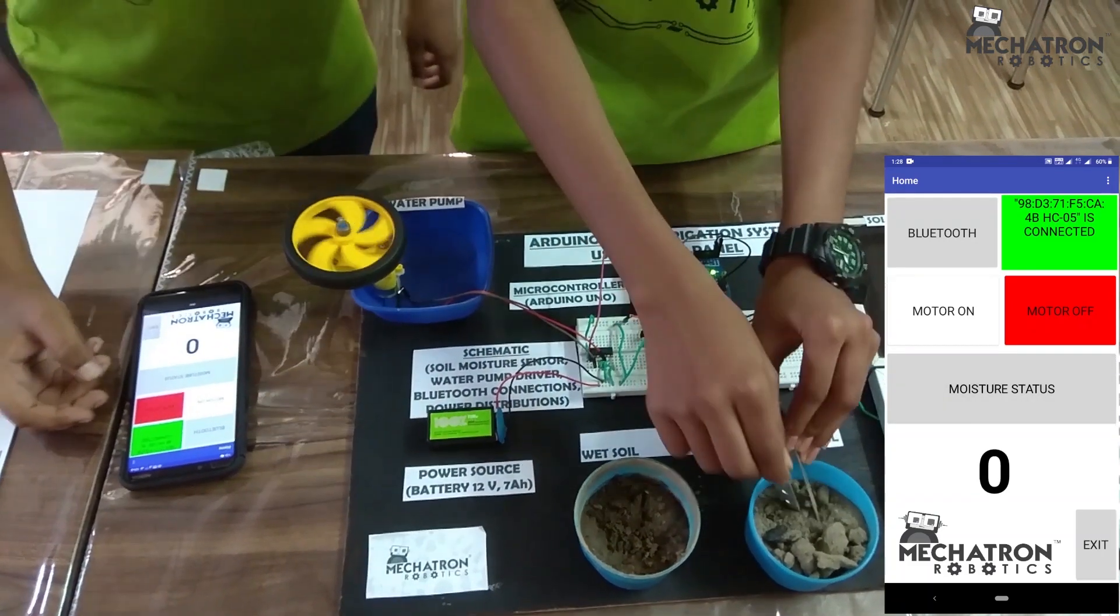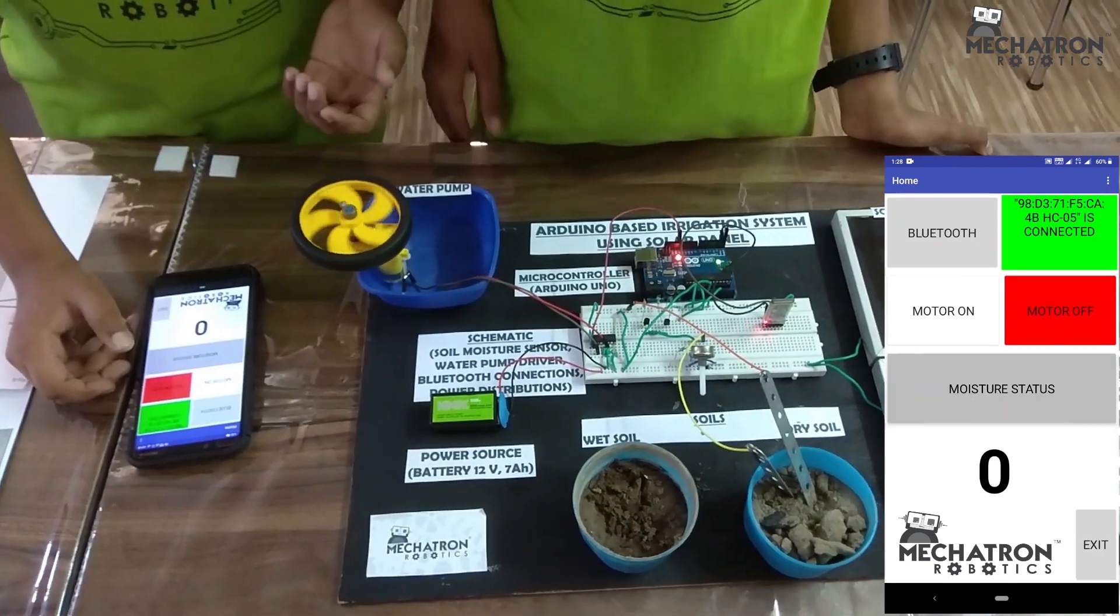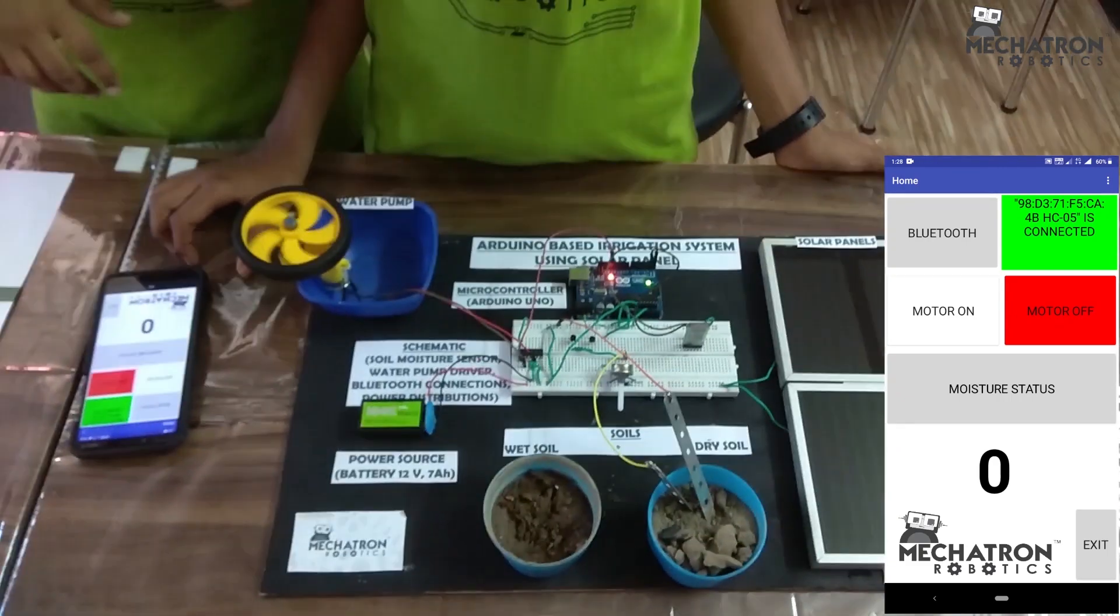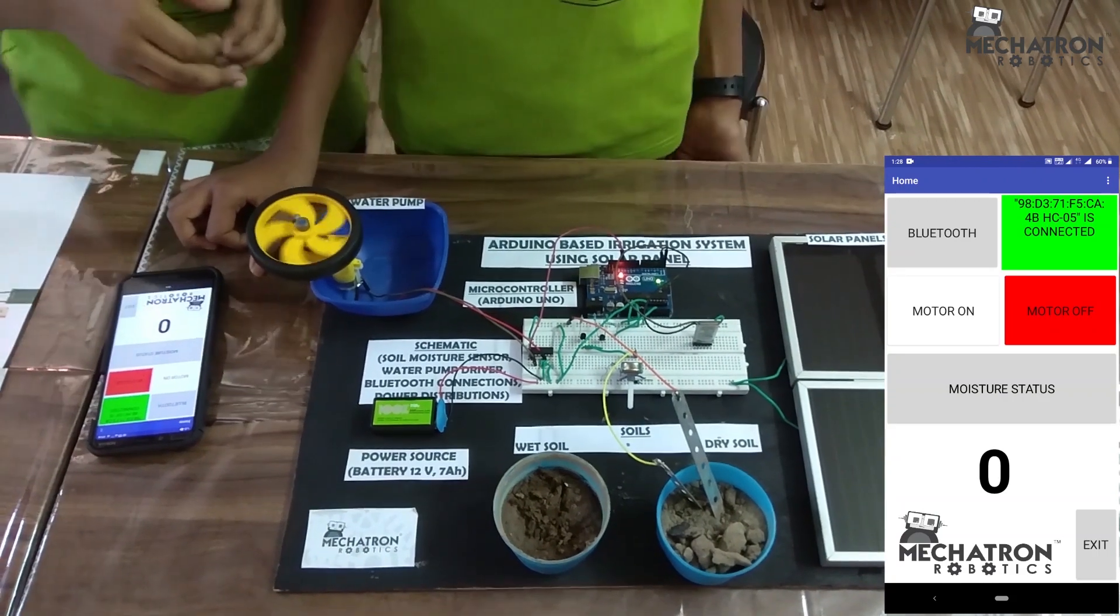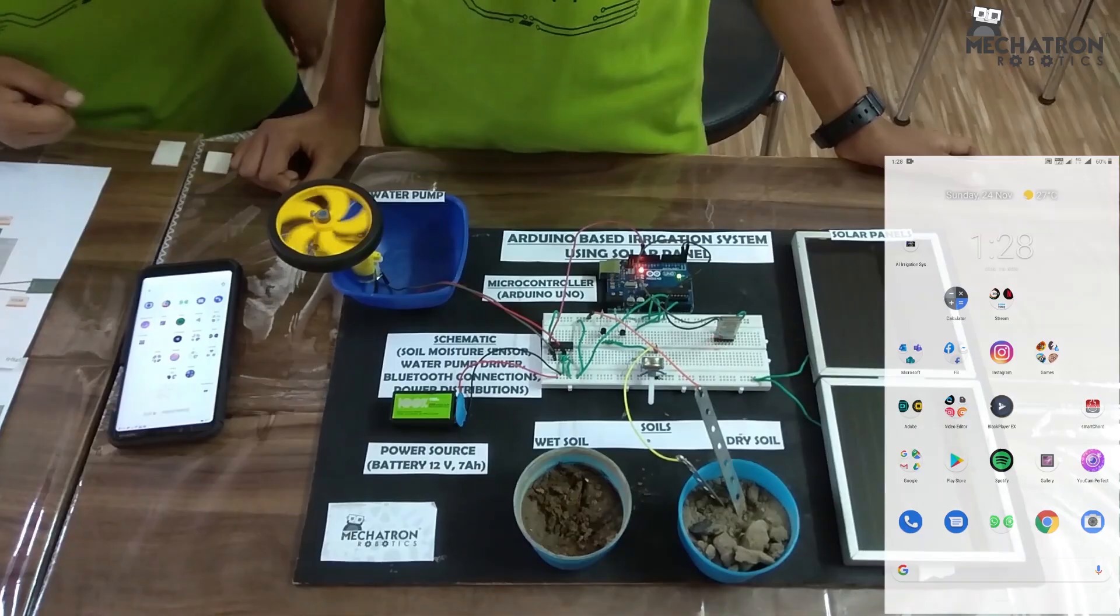But if we put in a dry soil, let us see what is the soil moisture value. Soil moisture value is 0. It is still 0 because the water is not there and it is a totally dry soil. So it is less than 200, so water will be pumped. And now we are exiting the app. Closing AI irrigation system.